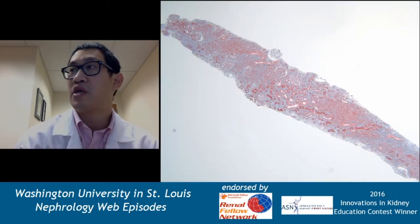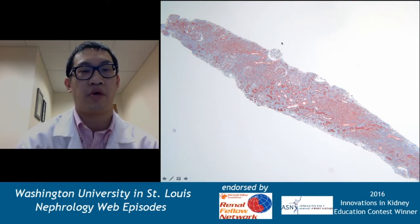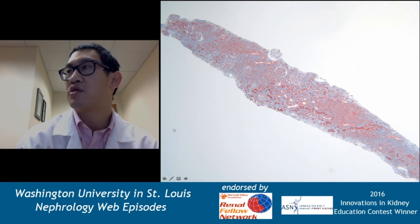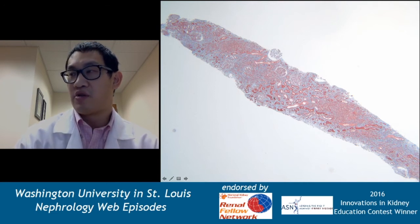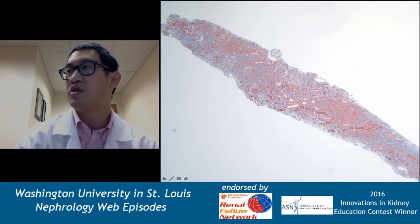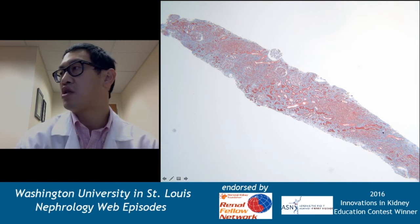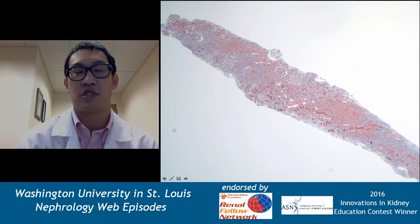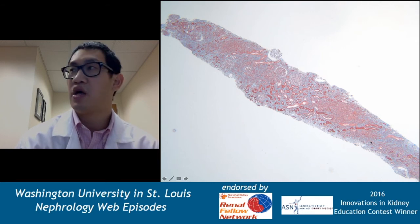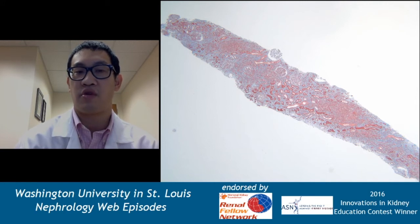Contrast that with this image — this would be an example of a low-power trichrome where there's a lot of chronic fibrosis. If you look at this whole tissue, there's some space where there are tubules kind of right here in the middle of this core, but there's a lot of space in between the tubules — that blue is fibrosis of the interstitium. There are large spaces here where there are no tubules, just completely replaced by fibrotic tissue. This would be a case of severe interstitial fibrosis, which usually implies that more than 50% of the tissue is fibrosed.